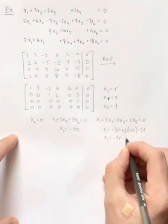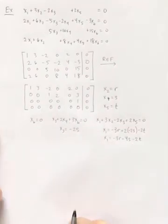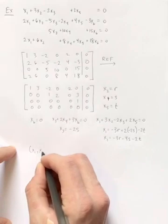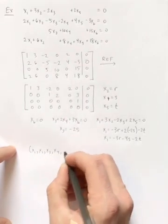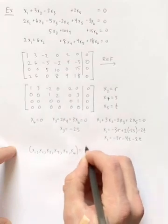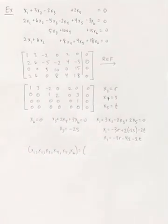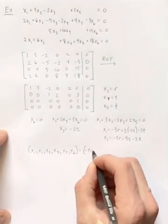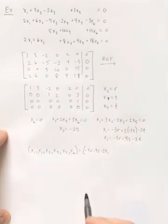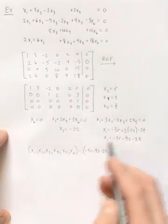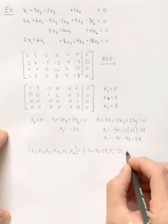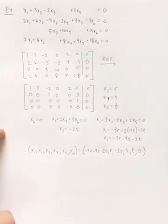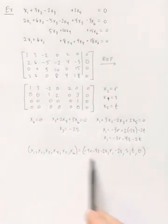So, I now have a solution to this. X1, X2, X3, X4, X5, X6 equals, and then I'm going to put in for each component what it should equal. So, for example, X1 was this, X2 was R, X3 was negative 2S, X4 was S, X5 was T, and X6 is 0. So, this is what any solution looks like.